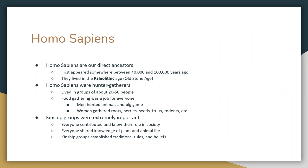Our direct ancestors are called Homo sapiens, and Homo sapiens appeared somewhere between 40,000 and 100,000 years ago. The period they live in is called the Paleolithic. Paleo means stone, lithic means age — Paleolithic: old stone age.